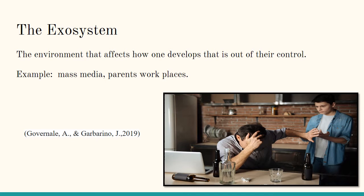The exosystem is described as the environment that affects how one develops that is out of their control. It is viewed as the social settings in which the adolescent does not have an active role but which influences the adolescent's experiences. For example, a parent losing his or her job may cause the adolescent to become extremely depressed or overwhelmed. Some may even harbor thoughts of suicide. Studies have also shown that adolescents who feel neglected at home may engage in risky behaviors such as sexual activity, substance abuse, cigarette smoking, preventable injury, and violence including self-harm, all of which may have significant repercussions for development.